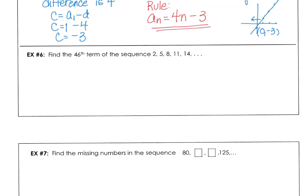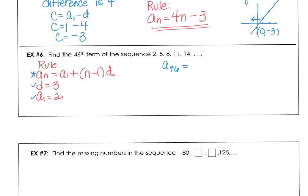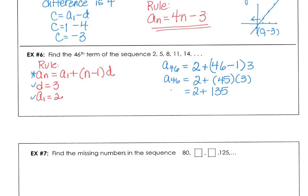Example 6 wants us to find the 46th term. The rule is a sub n equals a sub 1 plus n minus 1 times the difference. The difference is 3 (since 5 minus 2 is 3, and 8 minus 5 is 3), and the first term is 2. So the 46th term is 2 plus 45 times 3. That's 2 plus 135, which gives us 137 as the 46th term.